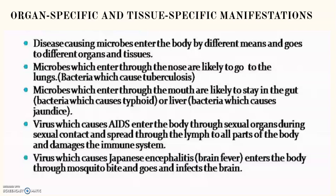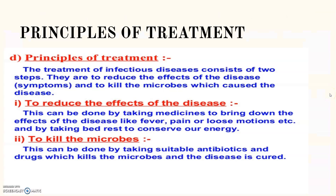In AIDS, it is the HIV — Human Immunodeficiency Virus — which enters the body. The immune system is a major factor that determines the number of microbes surviving in the body. If you have a stronger immune system, your body will fight the infection; if you have a weaker immune system, you may get the disease. So you have to make your immune system stronger by taking a healthy, proteinaceous diet.